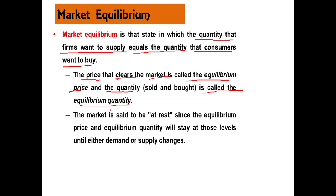To repeat: equilibrium price is the price at which both demand and supply of the commodity or service are equal. Equilibrium quantity is the quantity where the product bought and sold are both equal. The market is said to be at rest, and equilibrium price and equilibrium quantity will stay at those levels until either demand or supply changes — there will be equilibrium unless there is a disturbance in demand or supply forces.